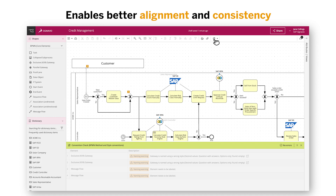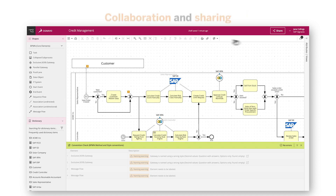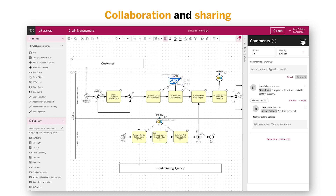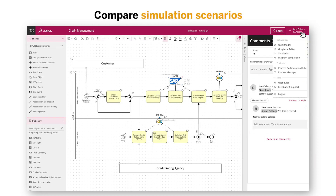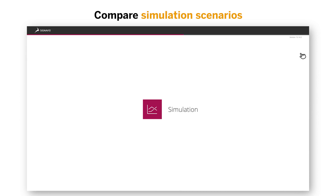The suite-wide collaboration and sharing features allow process participants to offer contextual feedback, with commenting available both on an individual task and process level. Simply tag the correct stakeholder and they'll be notified of the request. Once your process is modeled, you can compare simulation scenarios to understand the impact of potential changes.